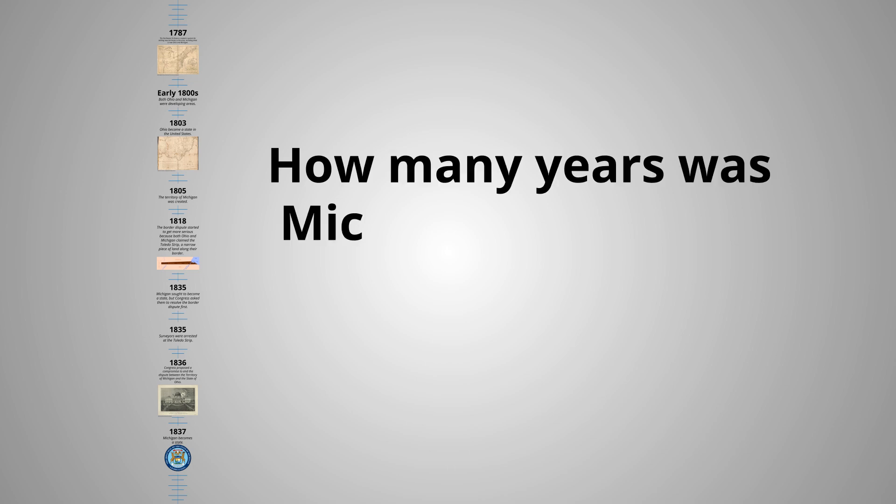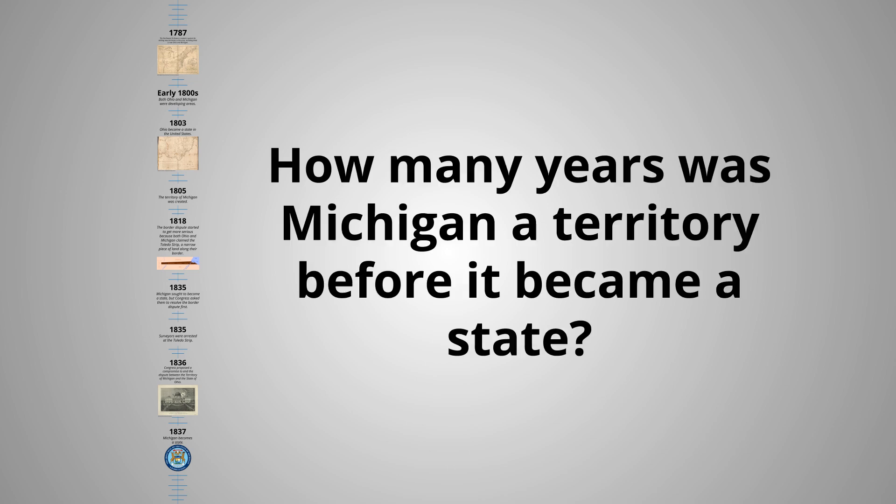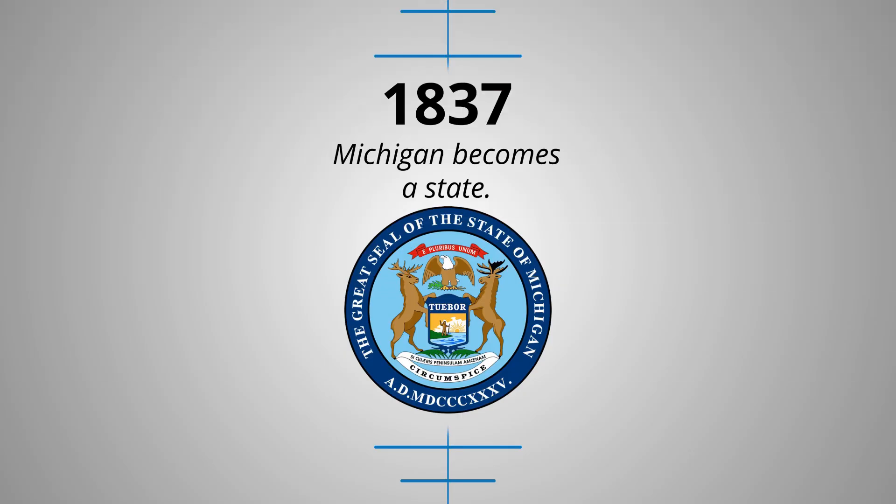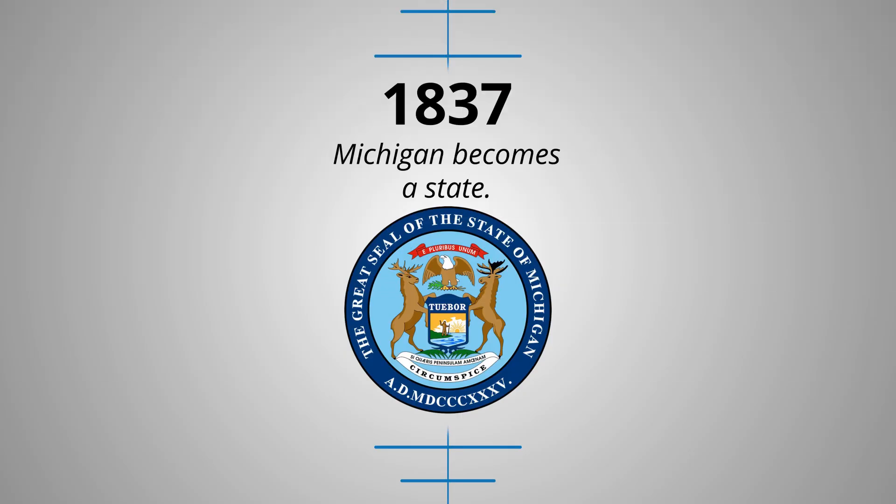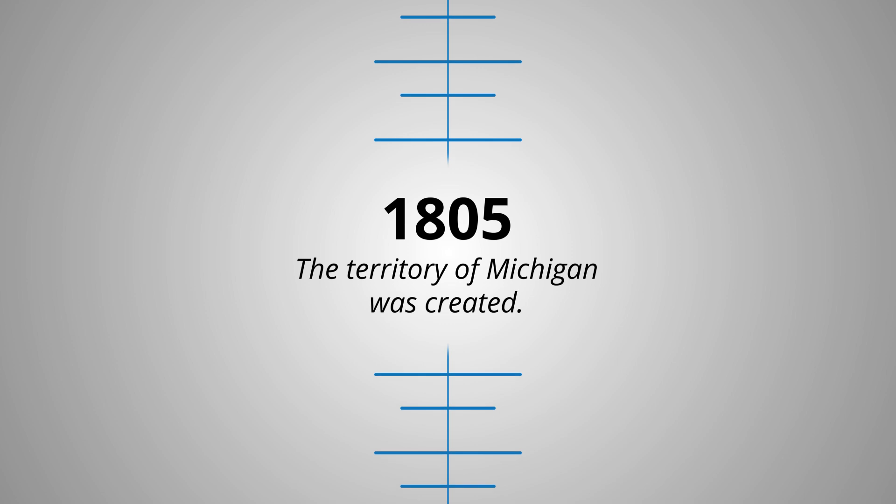Timelines not only help us keep events organized, but they also help us more quickly access answers to questions related to those events. Let's practice a couple together. Question: how many years was Michigan a territory before it became a state? Michigan became a state in 1837 and was a territory created in 1805, so counting backwards, the answer is 32 years. I was able to do that quickly because the information is very easy to find on a timeline.